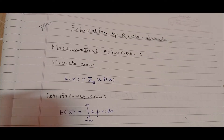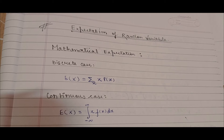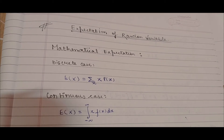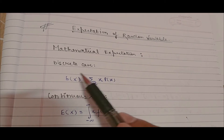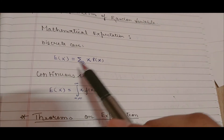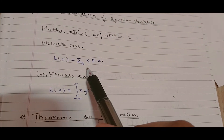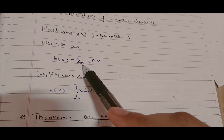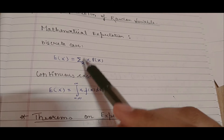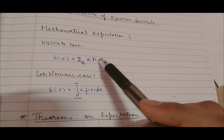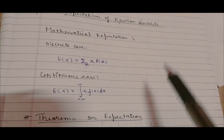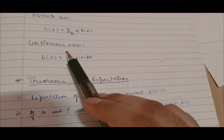Welcome back. Today we would be starting with the new topic: expectation of a random variable. Mathematical expectations are different for discrete and continuous cases. For the discrete case, expectation of X, also known as the mean, equals the summation of x into P(x). For the continuous case, it is the integral from minus infinity to infinity of x times f(x) dx.